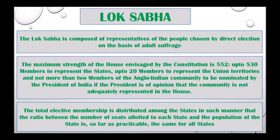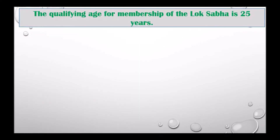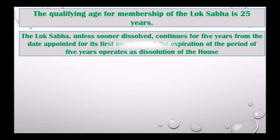The total elective membership is distributed among the states in such a manner that the ratio between the number of seats allotted to each state and the population of the state is, so far as practicable, the same for all states. The qualifying age for membership of the Lok Sabha is 25 years. The Lok Sabha, unless sooner dissolved, continues for five years from the date appointed for its first meeting, and the expiration of the period of five years operates as the dissolution of the house.